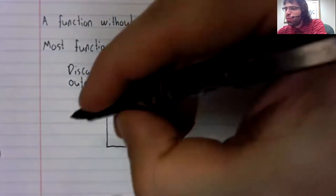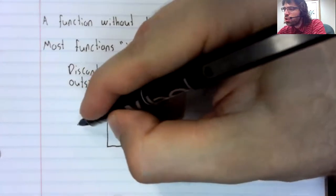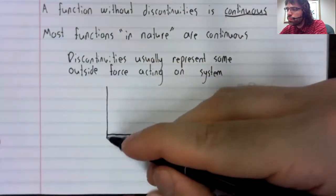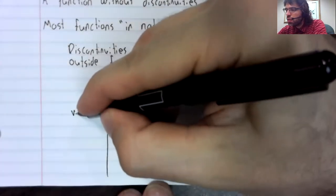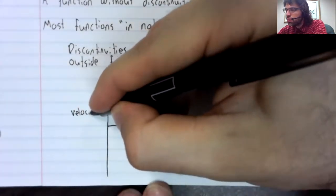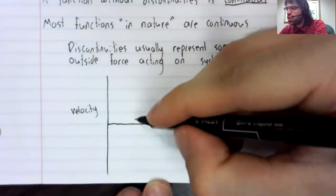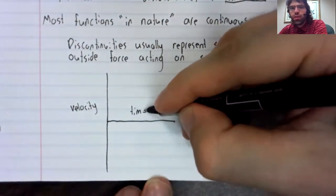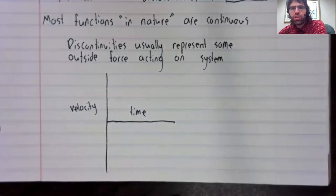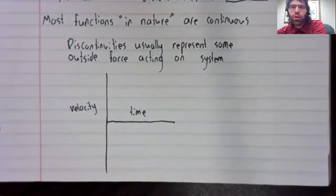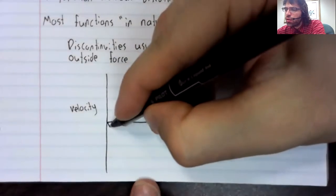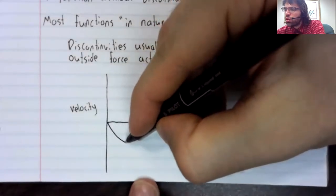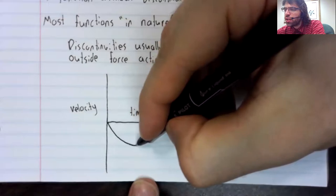For example, we could look at the velocity of a falling object over time. The curve will look something like this.